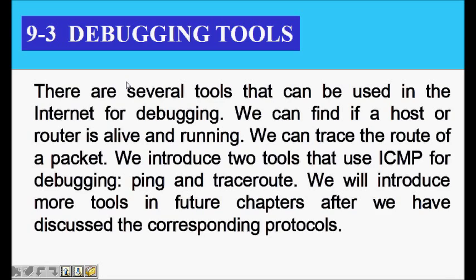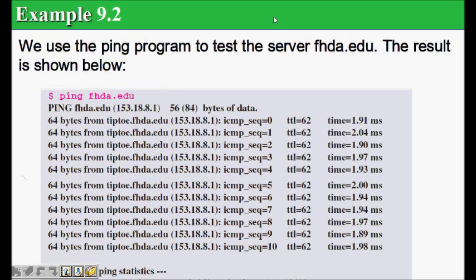Now we will move to debugging tools. As promised, we will look at ping and traceroute. Ping is used to check reachability, while traceroute finds the different routers through which a packet travels. Let's look at both tools.